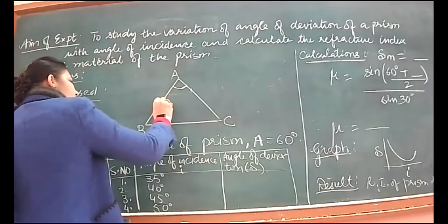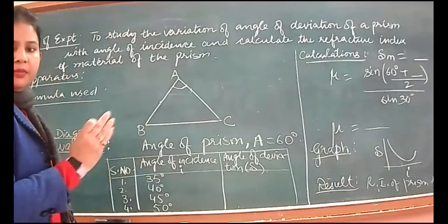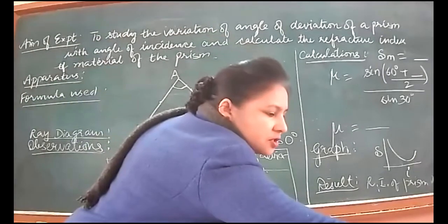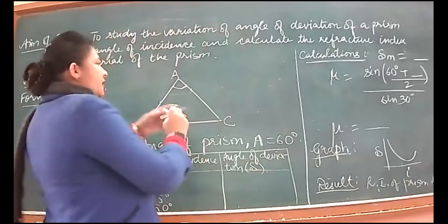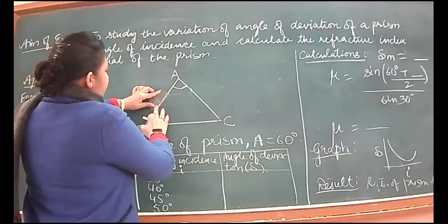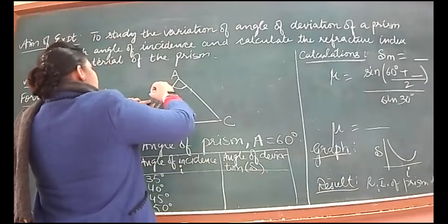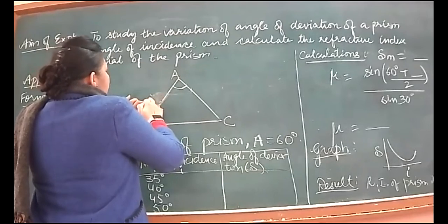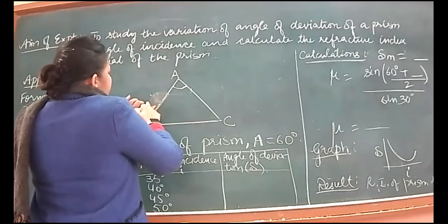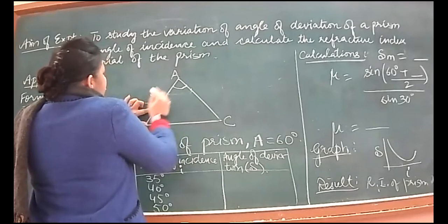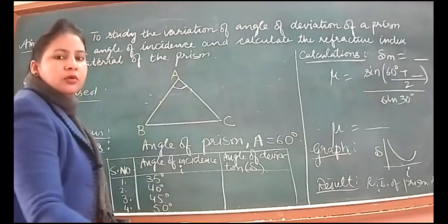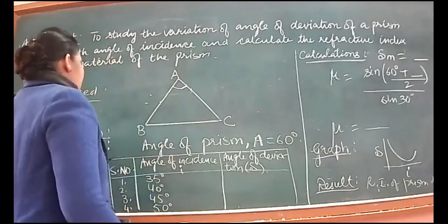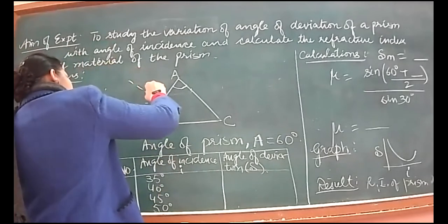We keep the protractor here on the drawing sheet. We will draw a 90-degree point and a 35-degree point. We will draw points at 80, 70, 60, 65. I'll draw the second point at 65. Then the angle between incident ray and normal will be 35 degrees. So this is the normal and this is our incident ray. This is I, 35 degrees to start with.